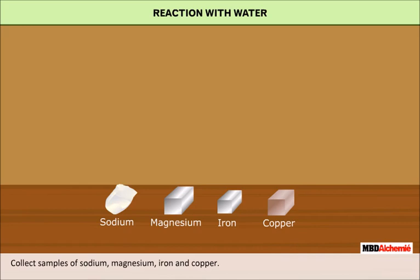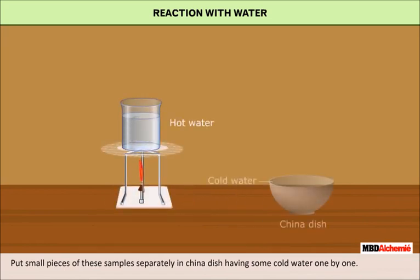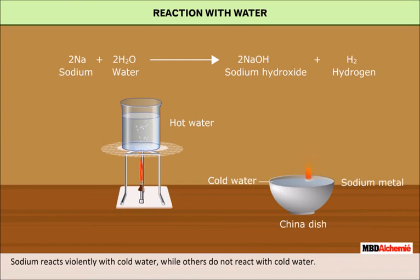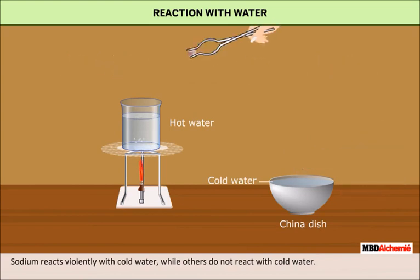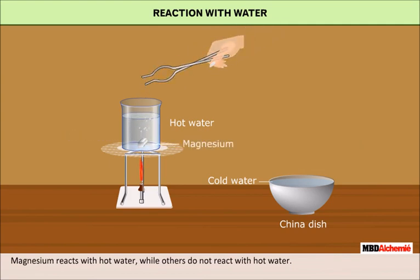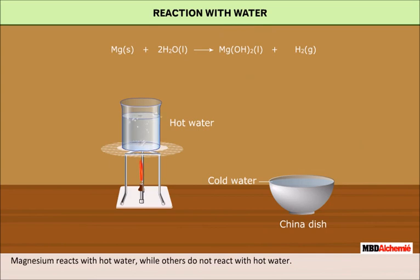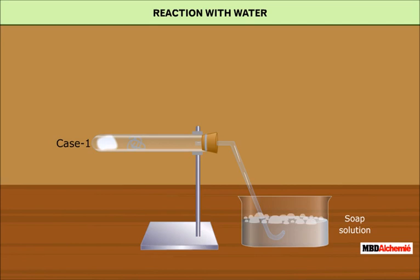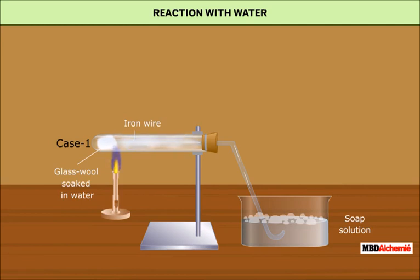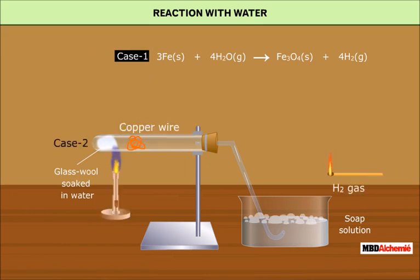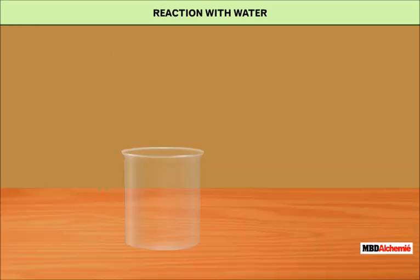Collect samples of a few metals like sodium, magnesium, iron and copper. Put small pieces of these samples separately in a china dish having cold water and add the metals one by one. We will observe that sodium reacts with cold water; the rest of the metals do not react with cold water. A similar activity performed in hot water shows that magnesium reacts with hot water while the rest do not. Put iron wire in a hard glass tube containing water-soaked wood and heat the test tube — iron reacts with steam and a gas evolves. Bring a burnt matchstick near it; it burns with a pop, confirming that hot iron reacts with steam to produce hydrogen gas. Repeating with copper shows that hydrogen gas is not produced.